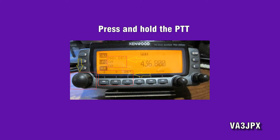My setting — I changed it from 7 alpha and I changed it to alpha 0, and that seems to work well for me. But your mileage may vary; you'll probably need to do a whole bunch of tests to see what the best setting is for you. Once you're done choosing your value, let go of the PTT and then press the set button on the display. If you don't do that and you power the radio off, it's not going to remember the setting.